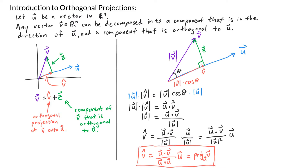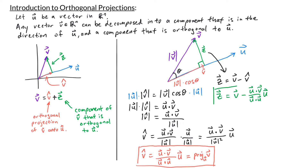To find the component of v orthogonal to u, we take the difference of v and v-hat: z equals v minus v-hat, or z equals v minus (u dot v / u dot u) times u. This is how we decompose a vector v into a component in the direction of u and a component orthogonal to u.